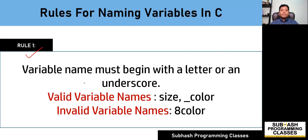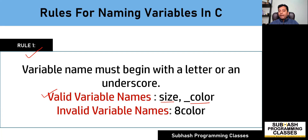Rule number one says variable name must begin with a letter or an underscore. So whenever you are creating a variable, the name for that variable must either begin with a letter or an underscore. For example, as you can see on the screen, the variable names 'size' and '_color' are considered as valid variable names.